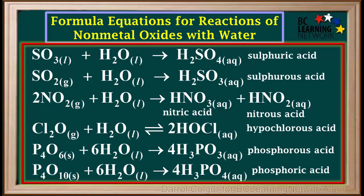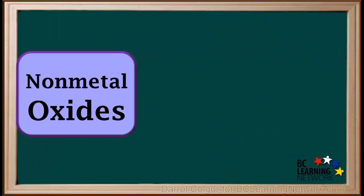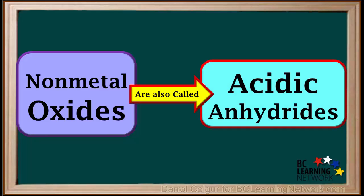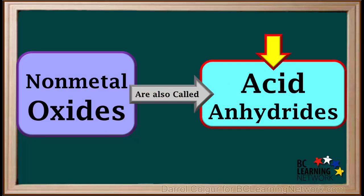You should be familiar with these reactions, especially the reactions for the oxides of sulfur and nitrogen. You should also know that non-metal oxides are also called acidic anhydrides, or simply acid anhydrides. It's important to remember that non-metal oxides, or acid anhydrides, react with water to produce acidic solutions.